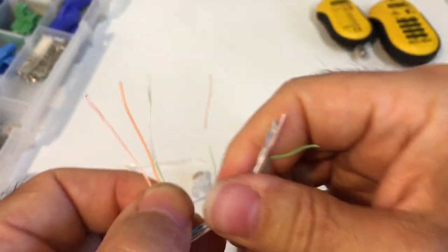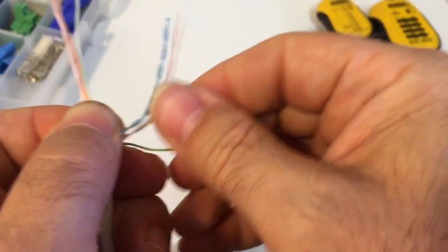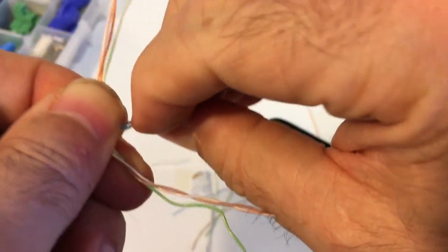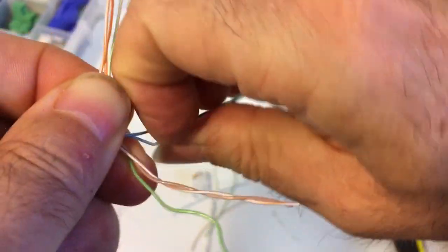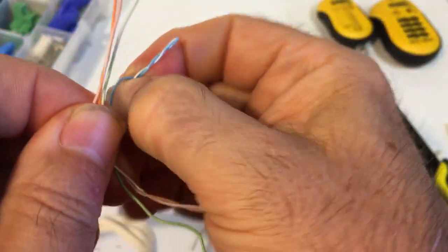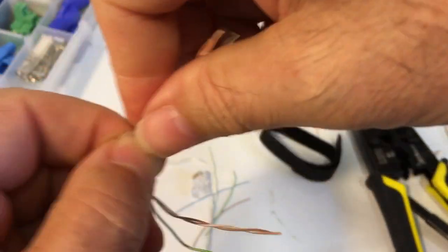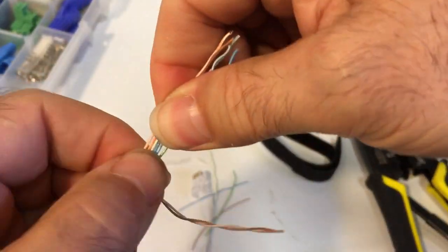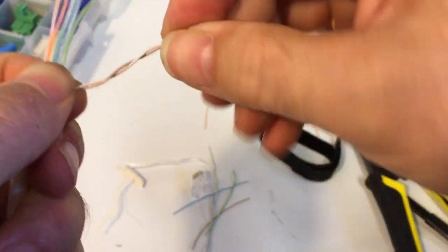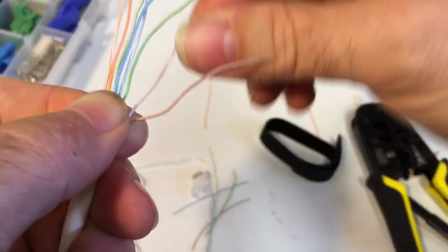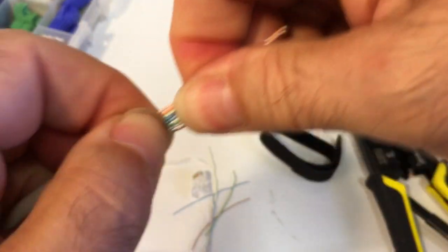Okay, I've got white-orange, solid orange, white-green. On my blue, I want to have my solid blue, and then my white-blue. And then I want my solid green. Sometimes you have to play around a little bit with the way that you swing the wires back and forth between each other to get them as flat as possible. And then on the brown, I want to have white-brown and then solid brown.